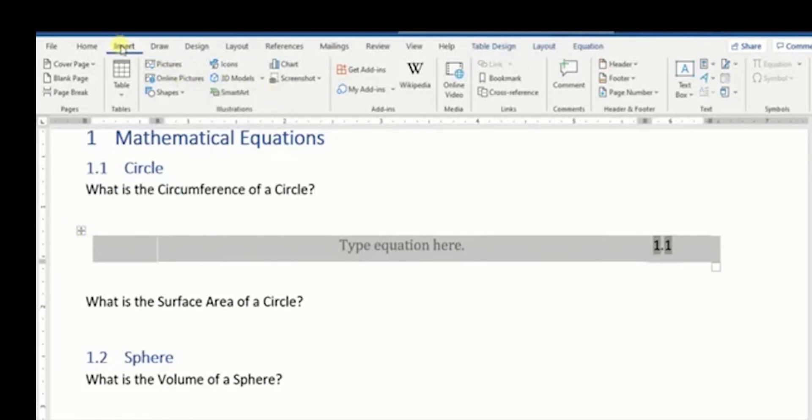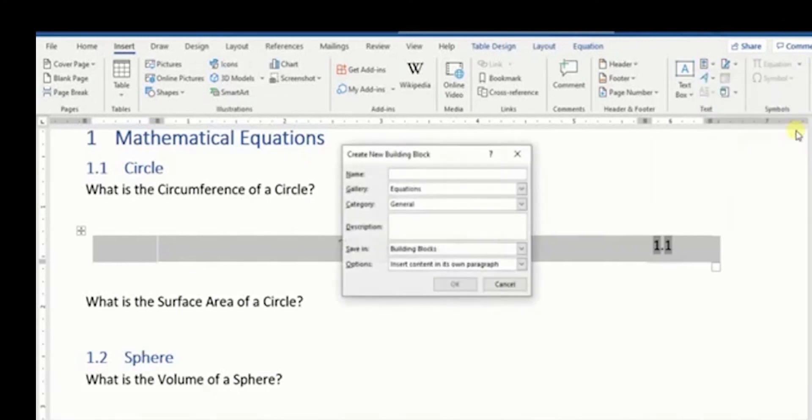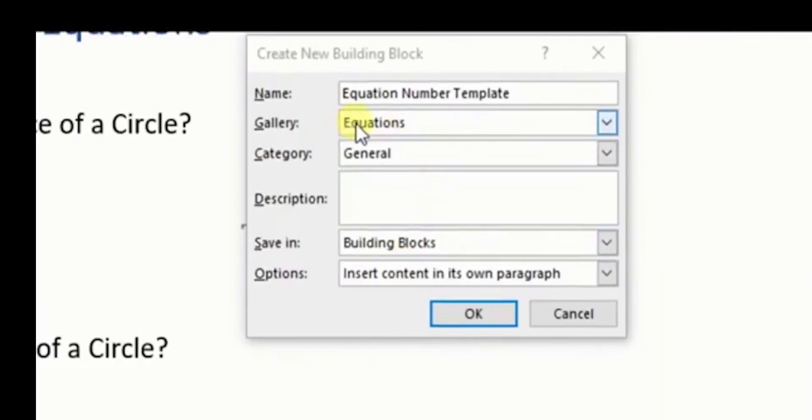What we need to do now is to save this template. We're going to highlight it, then go to insert, and on the equation there is an arrow here—select that and then click on 'save selection to equation gallery.' Once you do that, you can name this template whatever you want, so we can name it 'equation number template.' We can leave everything here as it is and click OK.